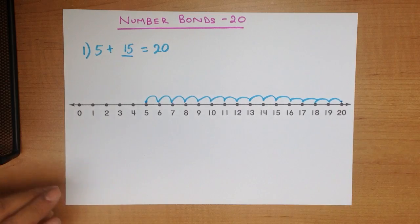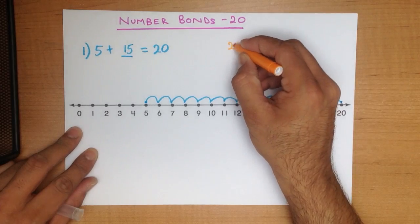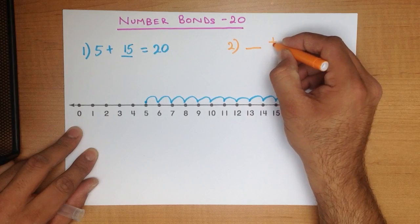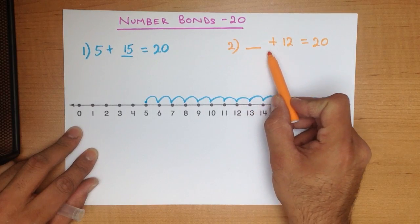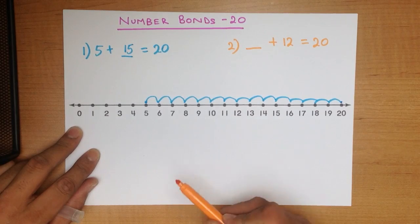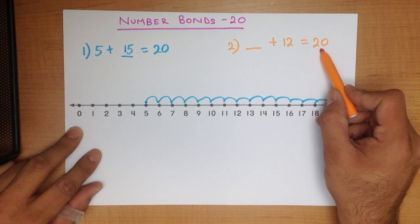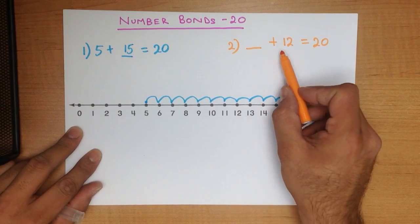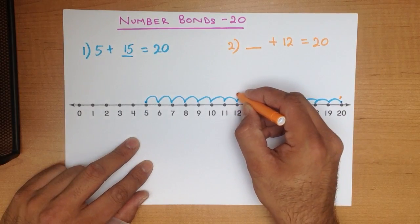Let's change colors and try a different example. In this case we've got something plus 12 equals 20. Something plus 12 equals 20 — it's another plus question. Where do we have to end up? It is 20. Let's put a dot here for 20. Where do we start? We start at number 12, so let's put a dot over here.